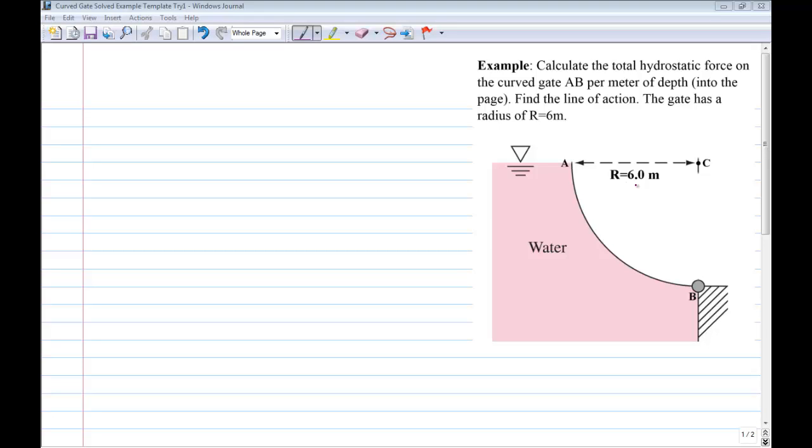This is an example of calculating the hydrostatic forces on a curved gate. I've shown the gate here over on the right. What we're considering is a gate that has a circular profile with a radius of 6 meters and the gate goes from A to B.